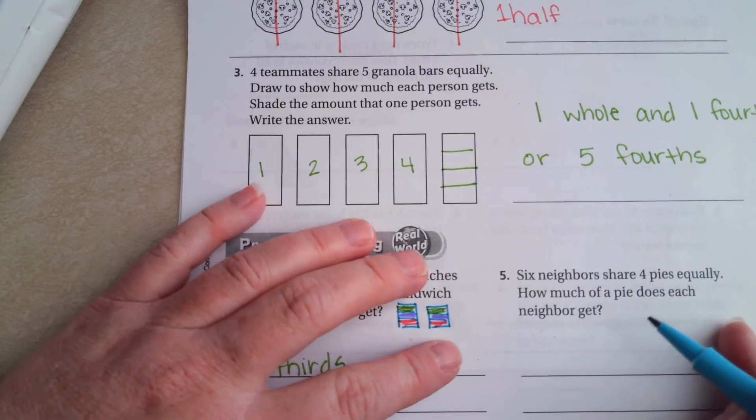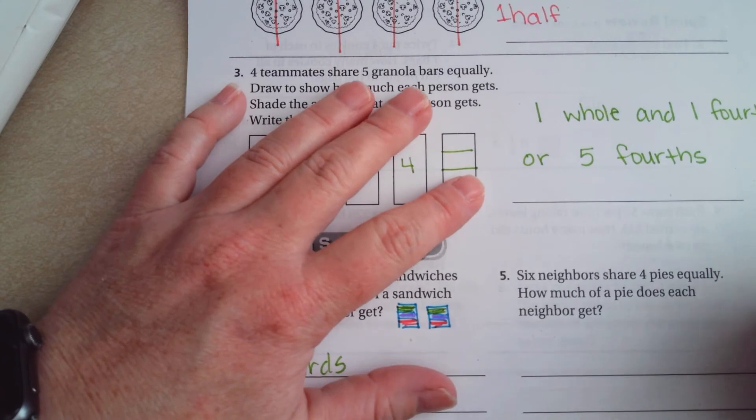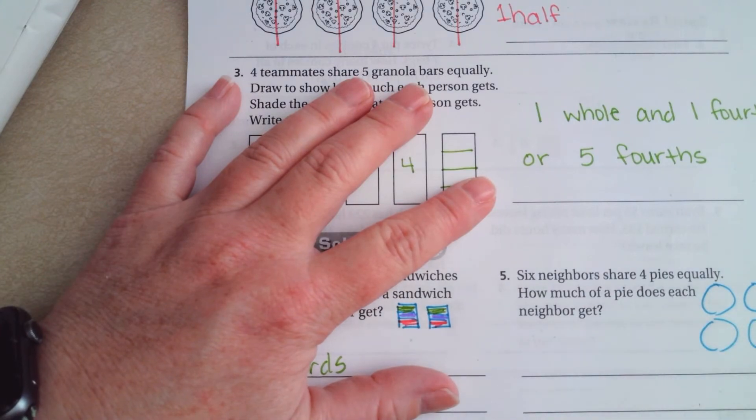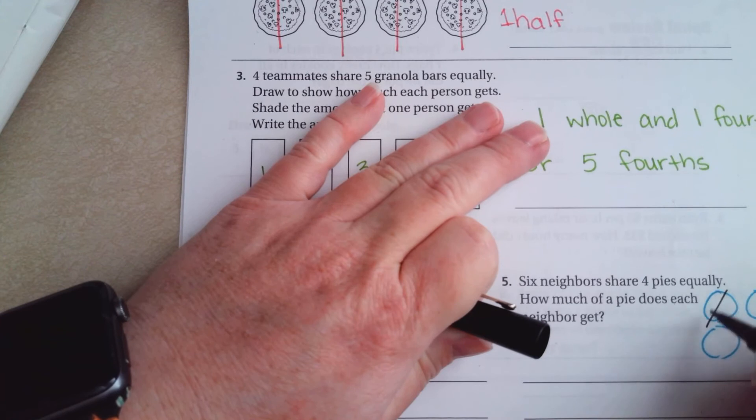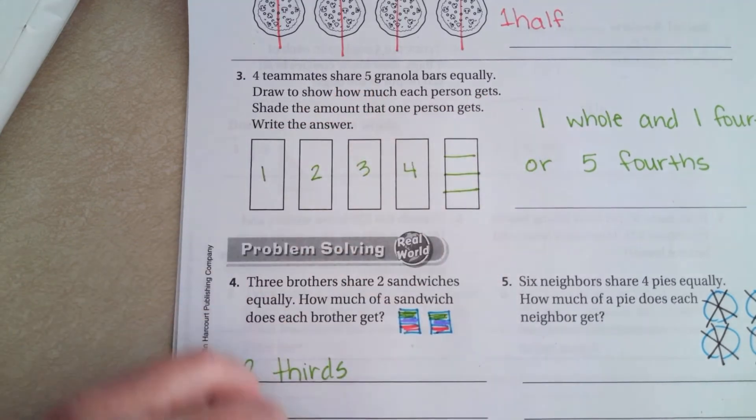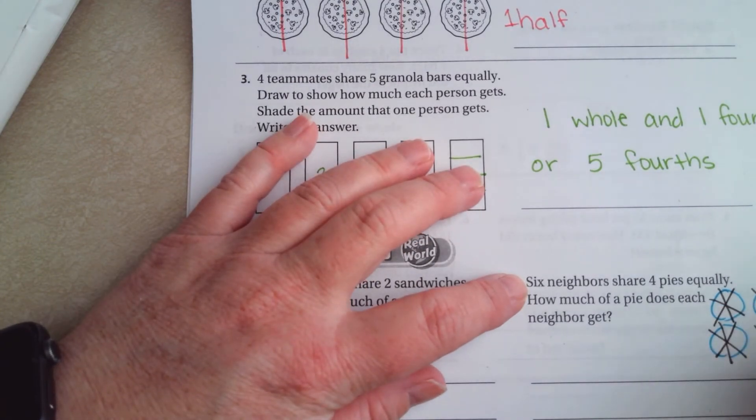Alright, 6 neighbors share 4 pies equally. How much pie does each neighbor get? So, 4 pies, cutting each one into 6 pieces. Okay, so, I'm going to go ahead and write just 1 through 6. So, 1, 2, 3.